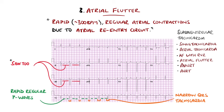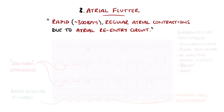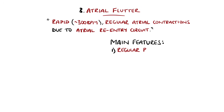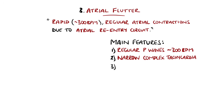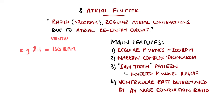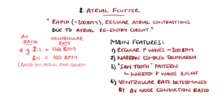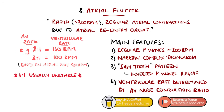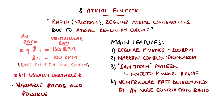The ECG in atrial flutter classically shows a sawtooth pattern from inverted P waves, usually in the inferior leads. It is described by looking at the ratio of non-conducted to conducted beats. Most commonly this is 2 to 1, giving a ventricular rate around 150 beats per minute. Higher ratios indicate a higher degree of block through the AV node. A conduction ratio of 1 to 1 is possible and is highly associated with instability and progression to ventricular fibrillation. These ratios can be variable, making the ventricular rate irregular, which is why it can often be mistaken for atrial fibrillation.